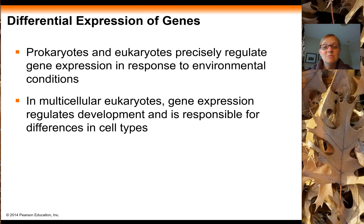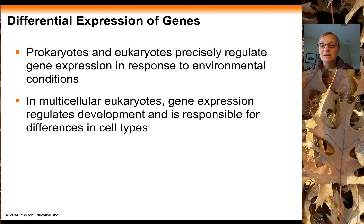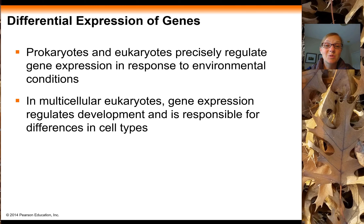In multicellular eukaryotes, pretty much every single cell in your body — with a few exceptions like red blood cells or certain immune cells that lack a nucleus — has the exact same genome. And yet our cells are so very different from each other: the function of a skin cell versus a nerve cell is completely different. What creates that difference comes down to differential gene expression. Skin cells only express the genes they need to function like skin cells, and liver cells only express the genes and proteins they need to function like liver cells.